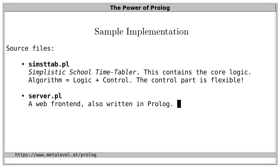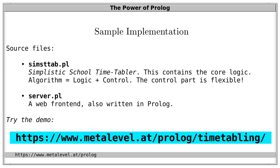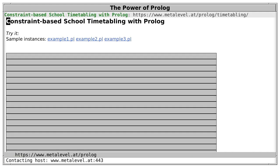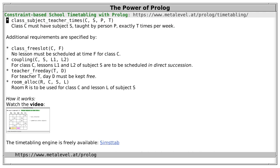The web frontend benefits from the clean interface predicates — instead of emitting terminal output, the web server creates an HTML file and sends it to the client. Combined, this gives a website where you can enter requirements and see whether the system finds a solution. There are sample instances to try, explanations of what can be specified, and a short video explaining how it works.